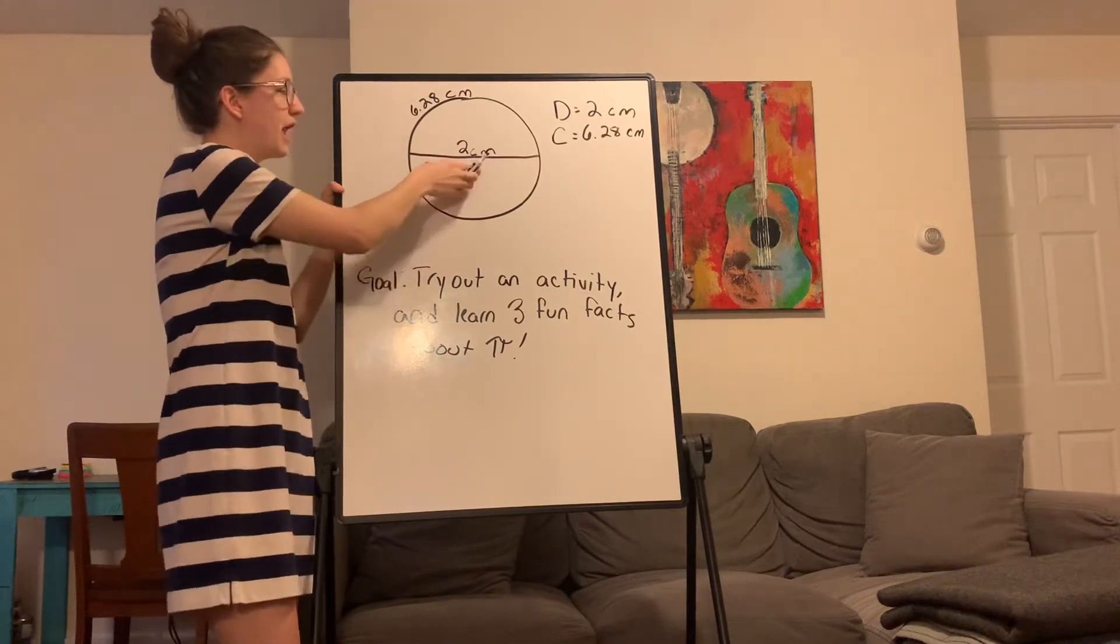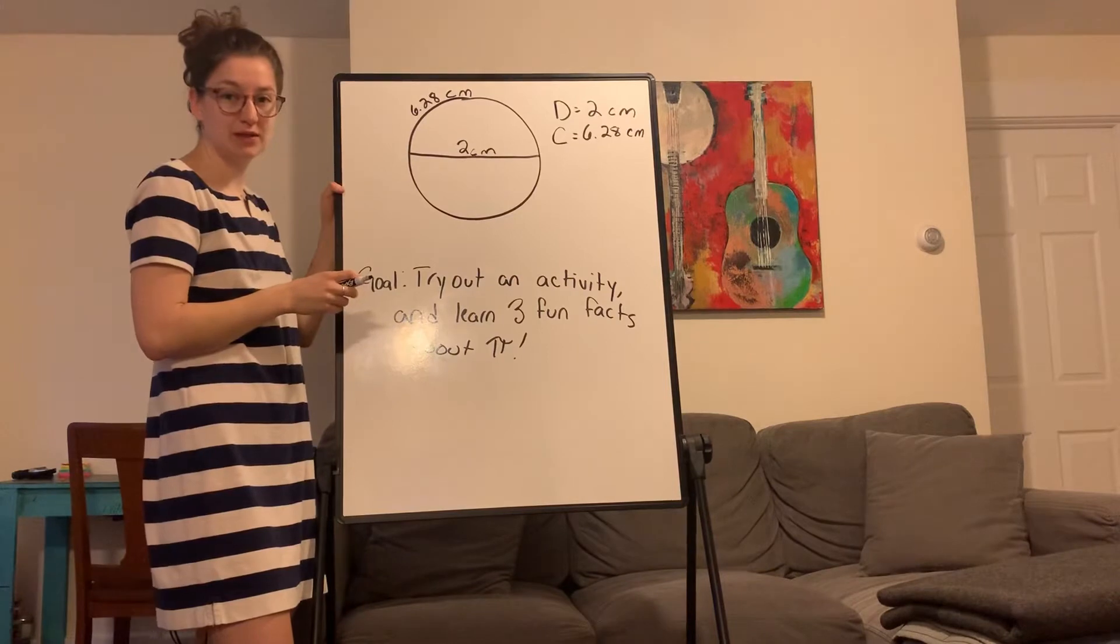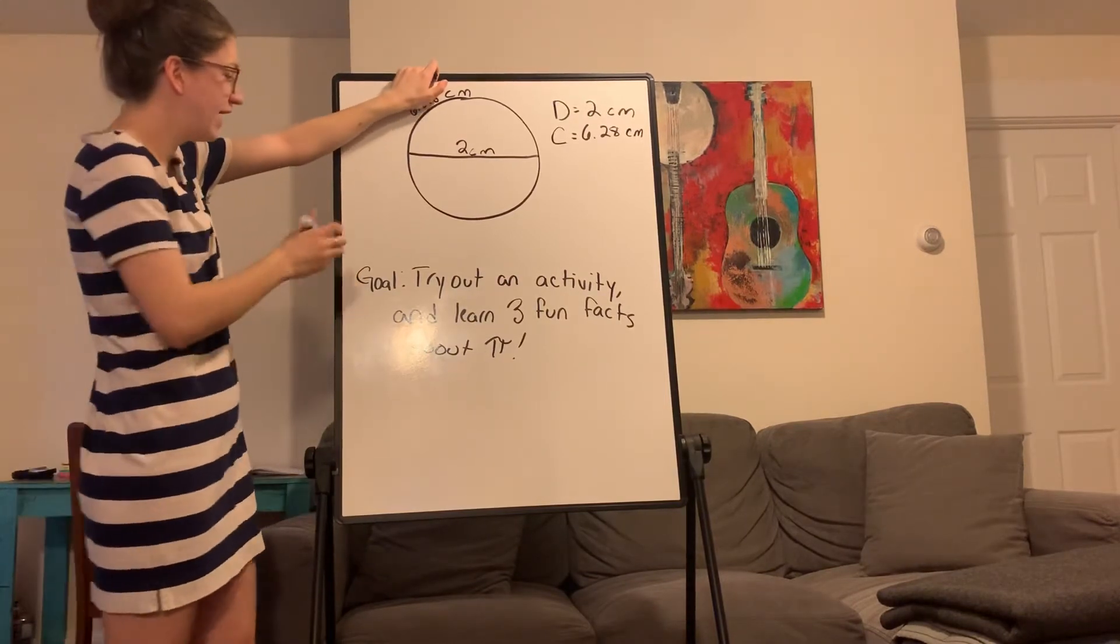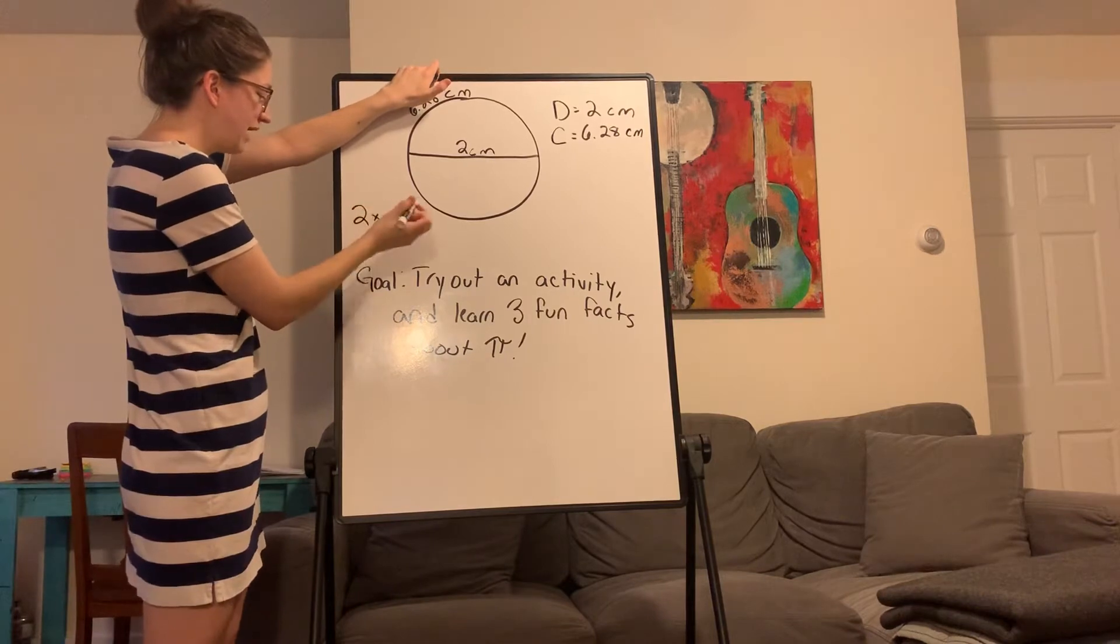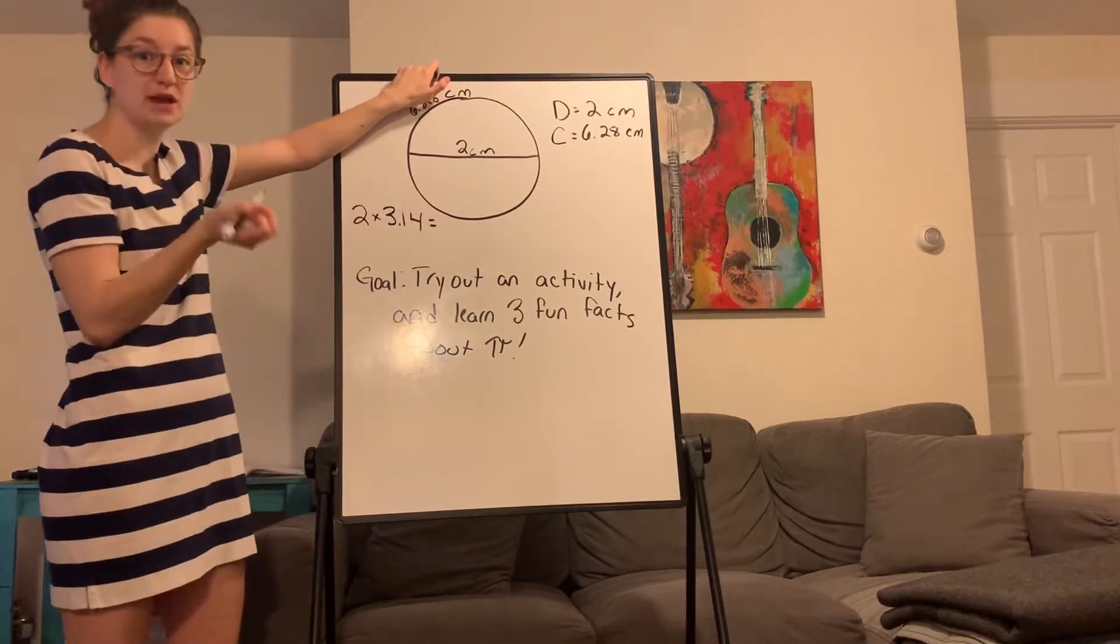So here's a circle. The diameter is 2 and the circumference is 6.28. If I didn't know the circumference, I could find it by doing 2 times 3.14, which is my approximation for Pi.